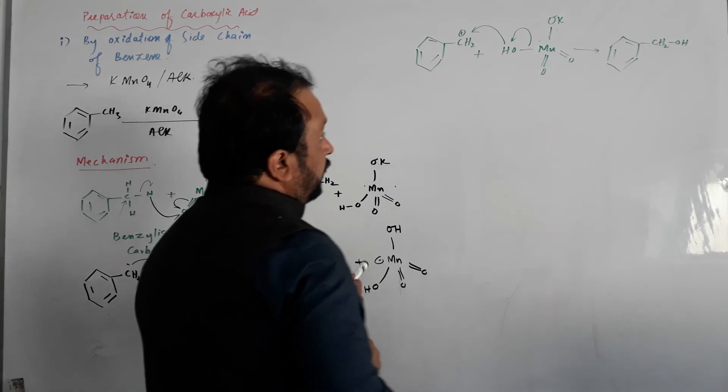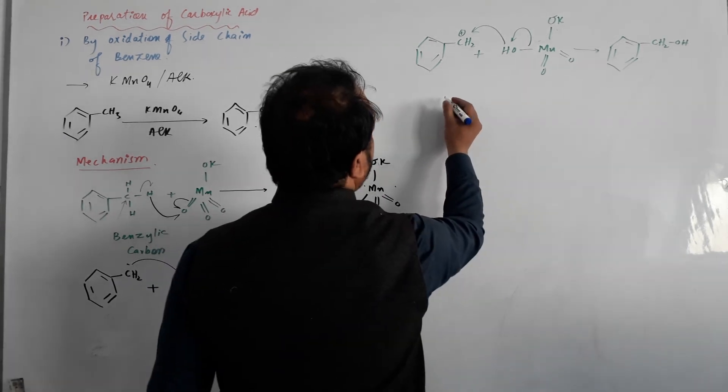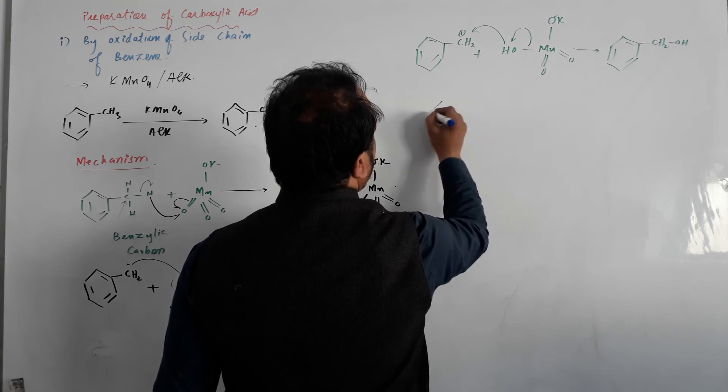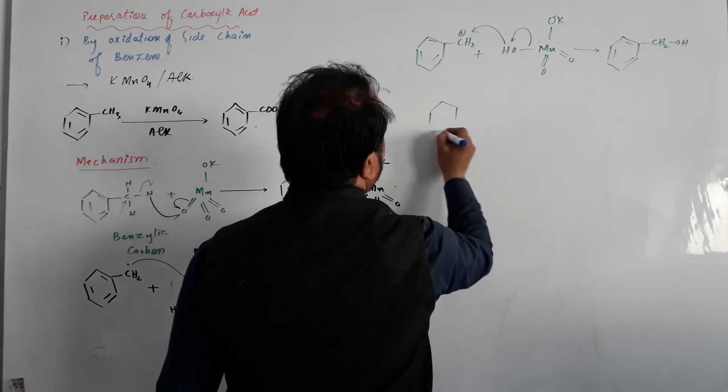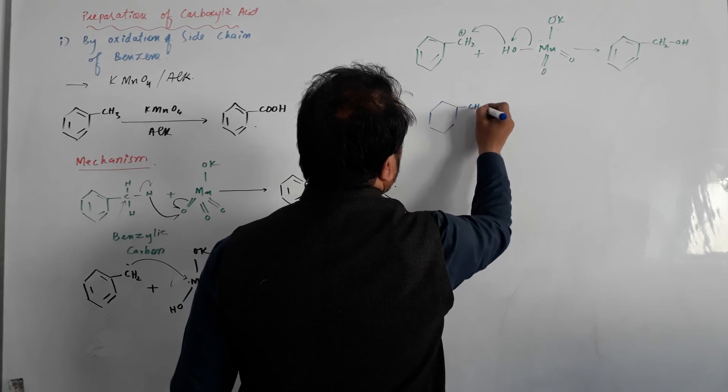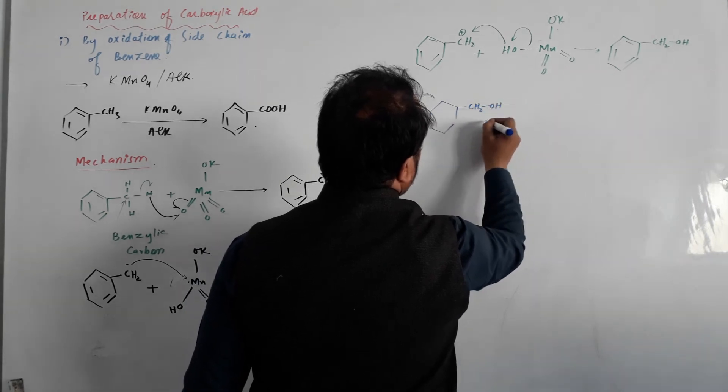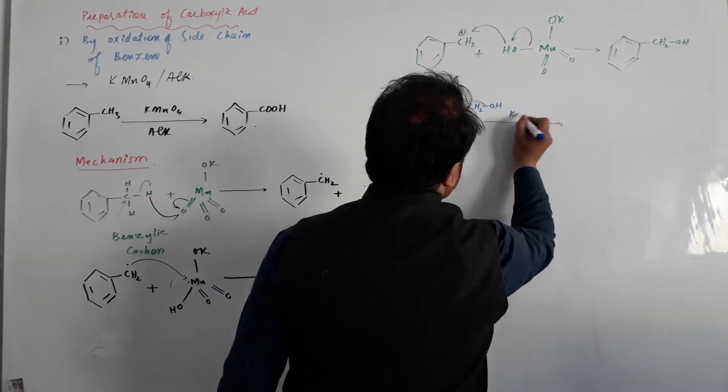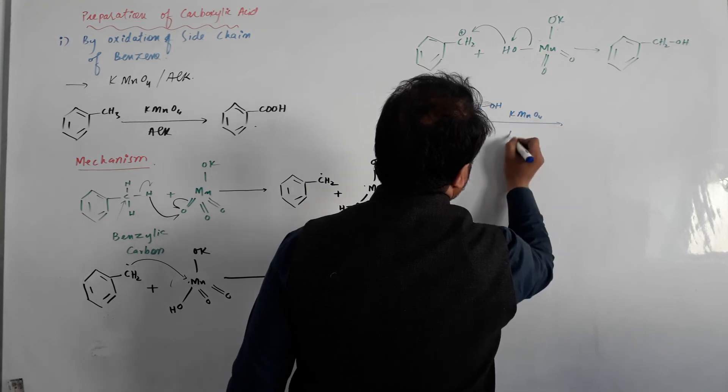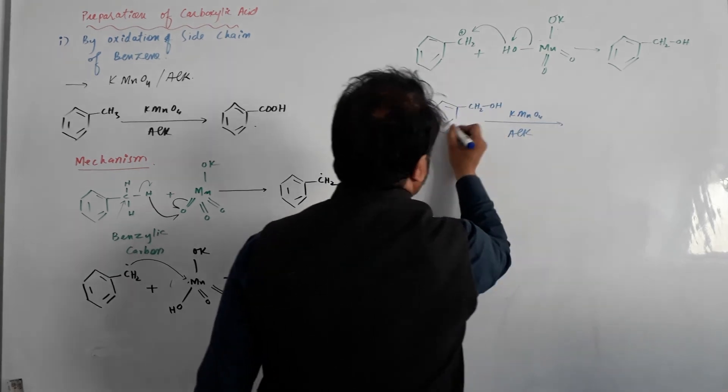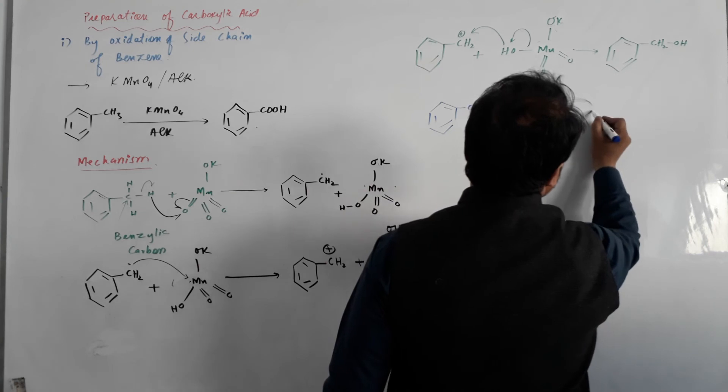Another hydrogen from the benzylic carbon is removed in the presence of K-MnO4, forming a hydroxyl group in the same manner.